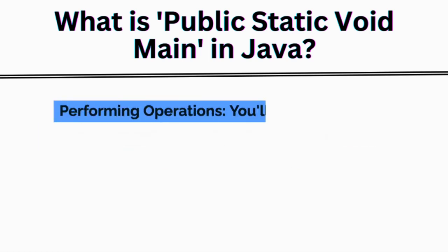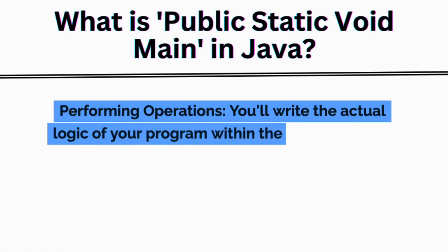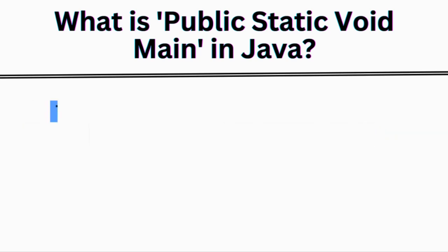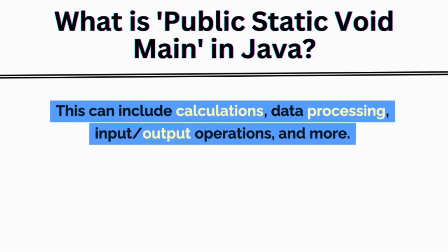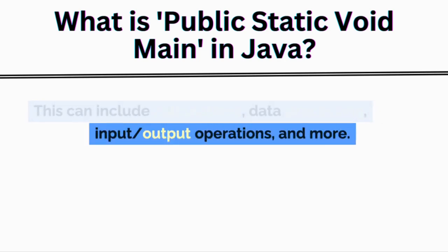Performing operations: you'll write the actual logic of your program within the main method. This can include calculations, data processing, input slash output operations, and more.